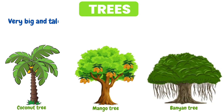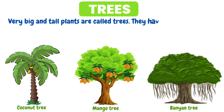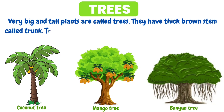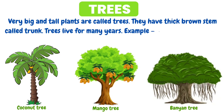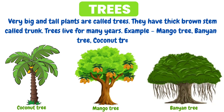Trees: Very big and tall plants are called trees. They have a thick brown stem called trunk. Trees live for many years. Examples: mango tree, banyan tree, coconut tree, etc.